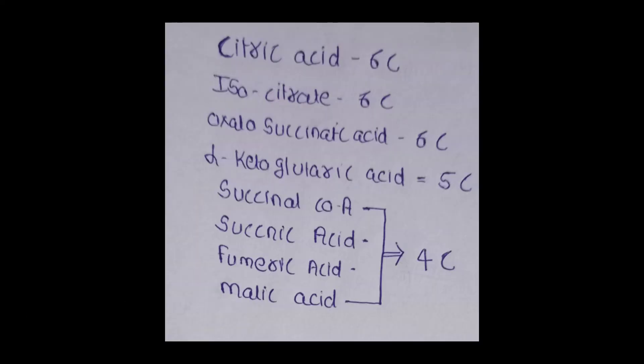Citric acid: 6 carbons. Isocitrate: 6 carbons. Oxalosuccinate acid: 6 carbons. Alpha-ketoglutaric acid: 5 carbons. Succinyl coenzyme A, succinic acid, fumaric acid, and malic acid are 4 carbons.